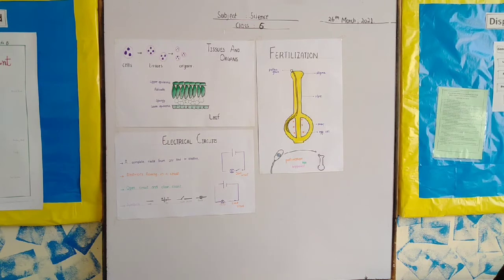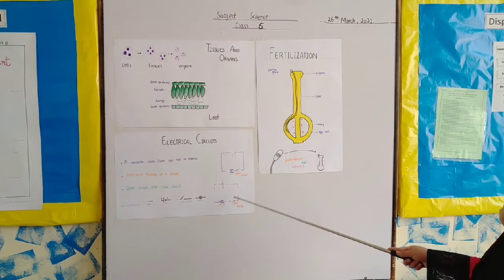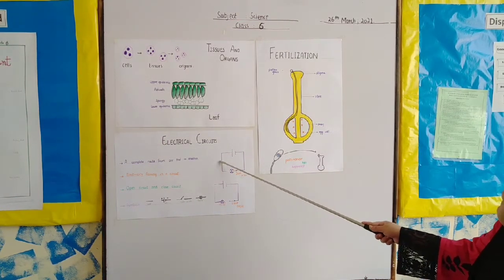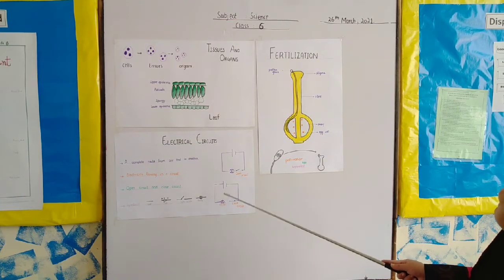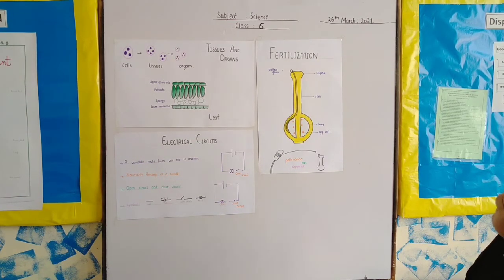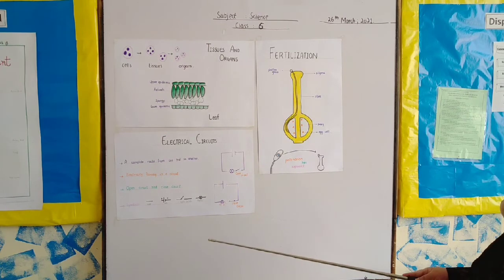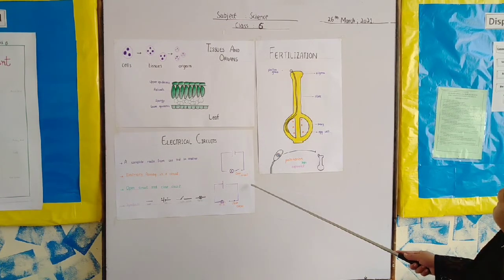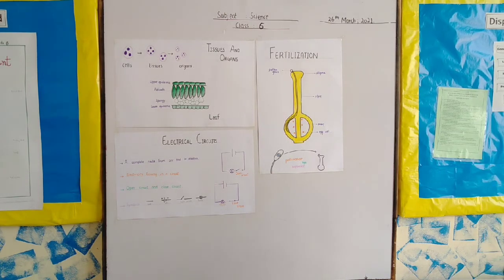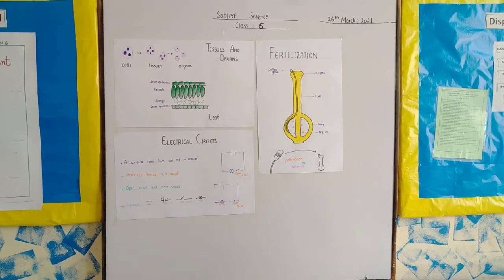And sometimes we also attach an ammeter with the bulb. Now what is an ammeter? Ammeter is used to measure the flow of the current. So that is called ammeter. This was it for today. Hope you people enjoyed. Thank you.